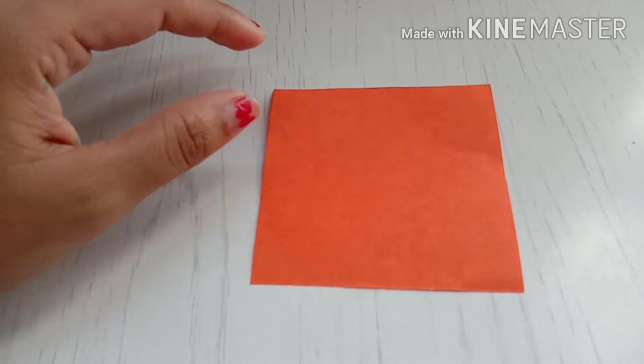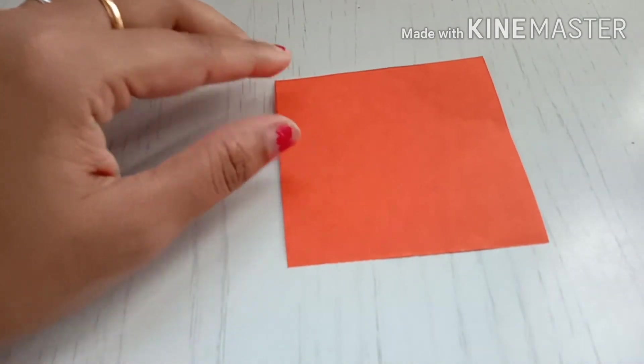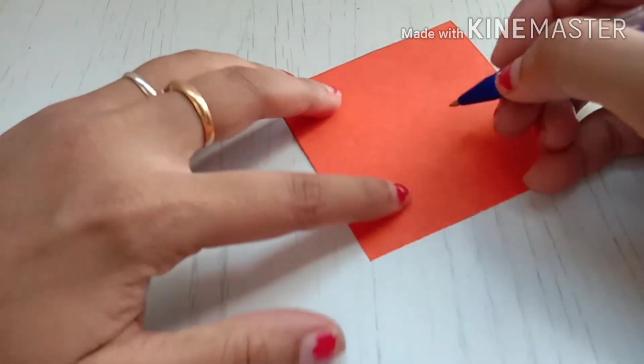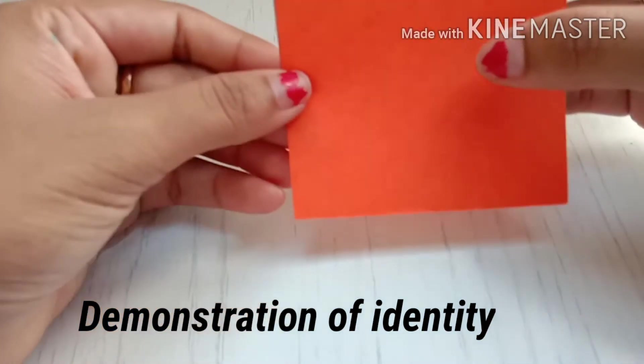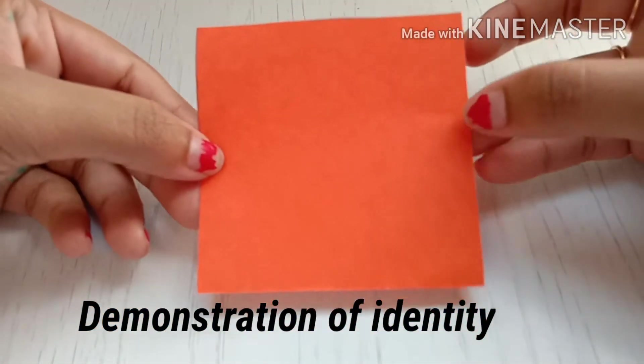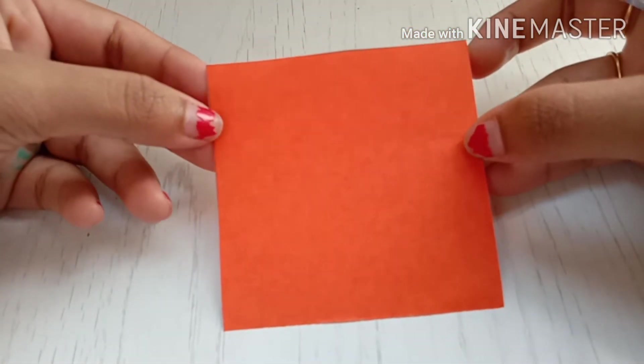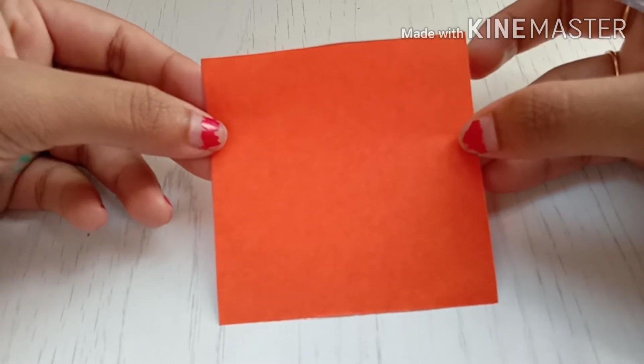So I took a square paper now, and the measurement of this paper is 8 centimeters. What is the area of a square? The formula is side into side.